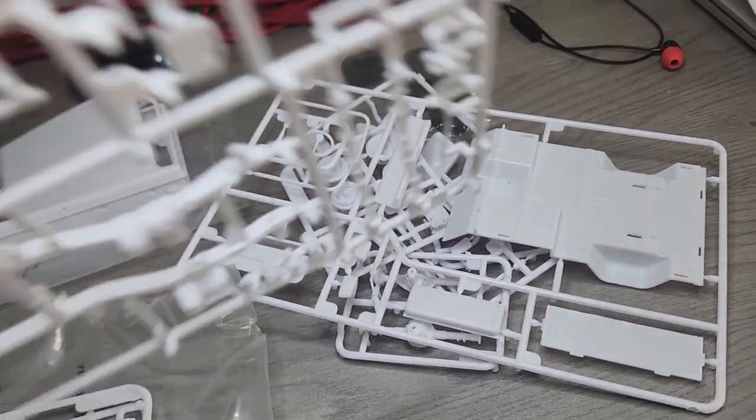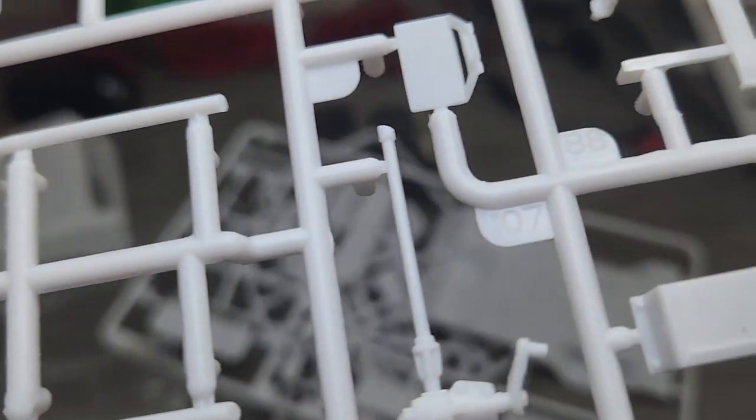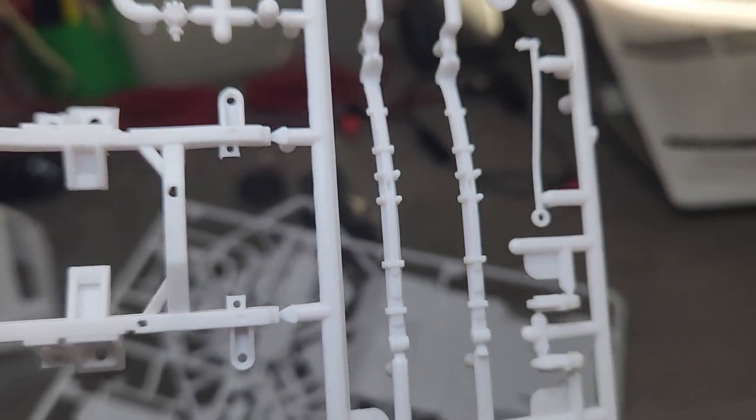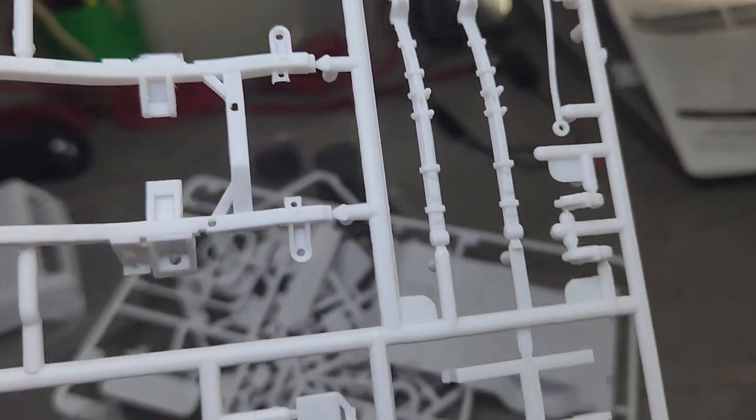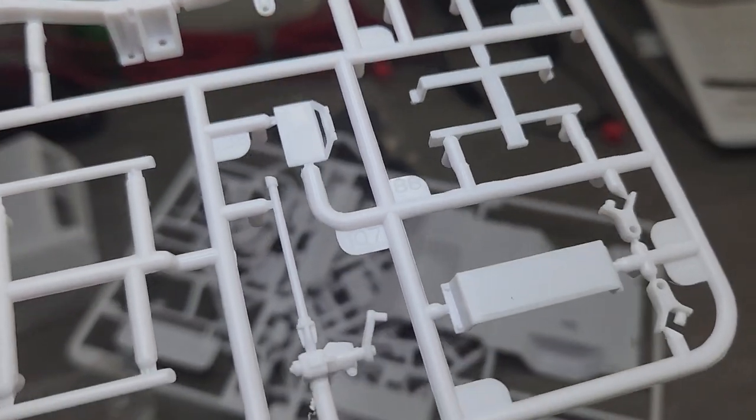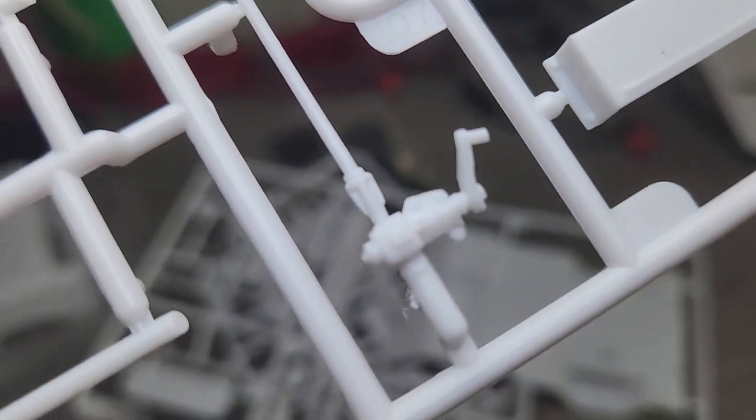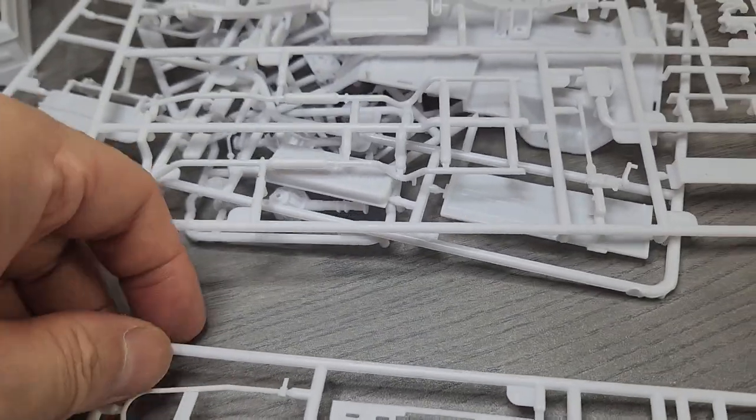Some more chassis, you get the frame. Exhaust, dual exhaust. And of course, the big off-duty leaf springs. Looks like some kind of steering rod. The steering mechanism.